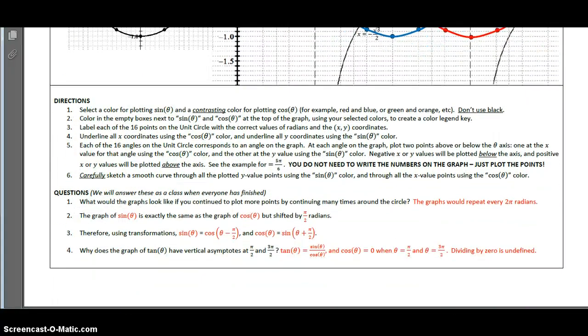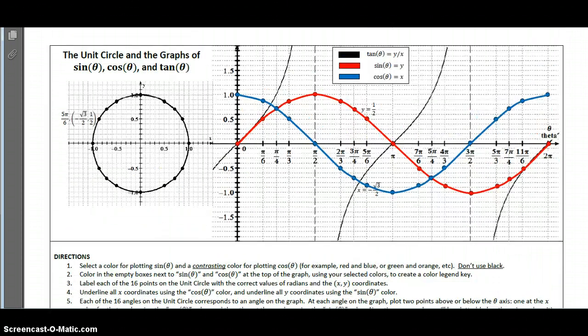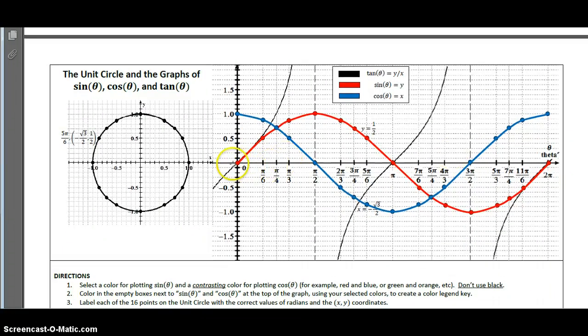Let's scroll down to the bottom of the paper down here and see how we can fill in the rest of this. If we were to continue to plot more points by continuing many times around the circle, what do you think would happen? And the answer is that the graph would repeat every two pi radians, each of the graphs. So if we go back up here and look at this, we know that this curve that we've created here represents one trip around the circle.